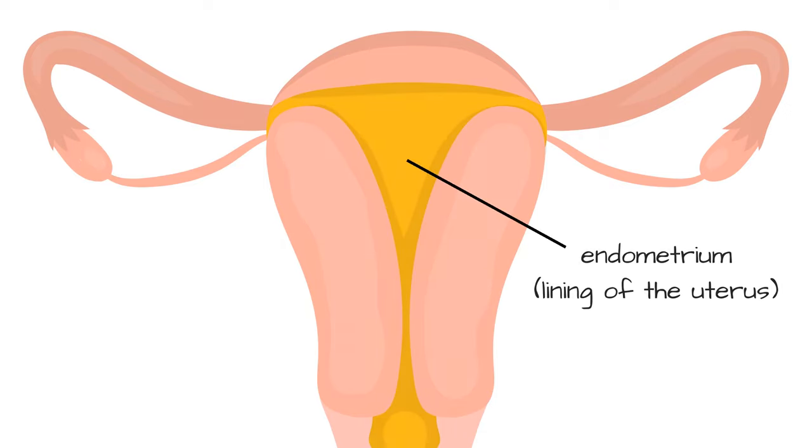Implants alter the lining of the endometrium to prevent the implantation of a fertilized egg. Sometimes a baby has already been created, but that baby is unable to attach to the wall of the endometrium to continue to grow. Because he cannot attach, he dies.